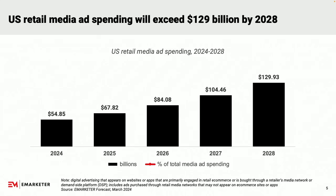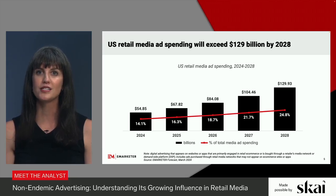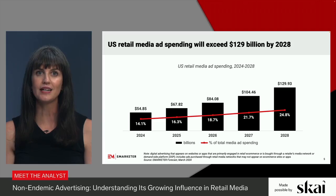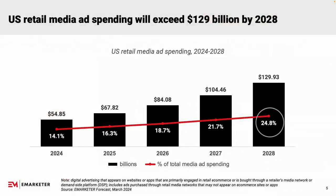Looking at eMarketer's U.S. ad spending forecast for retail media, we anticipate ad spend within this channel to come in above $54 billion this year. Looking through our forecast period to 2028, we expect ad spend to more than double to nearly $130 billion. In 2024, retail media makes up about 14% of all media dollars. By 2028, it will represent nearly one out of every $4 spent on media. Retail media is no longer a niche corner of digital advertising — it has the power to reshape how we look at media.